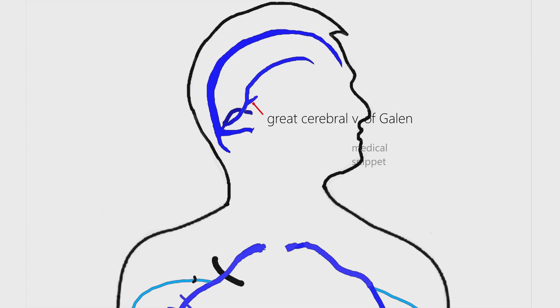The great cerebral vein of Galen is formed by the union of the two internal cerebral veins. The great cerebral vein receives the basal veins of Rosenthal from each side before its termination into the straight sinus.